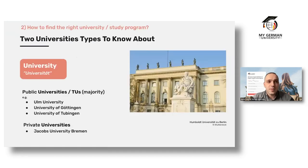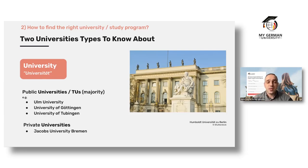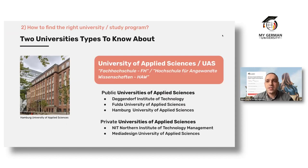There are two main types of universities in Germany. The first is the Universität, which you can find on our study finder filtered by type. The second is the University of Applied Sciences, which can appear under different German names, and you can also filter for that.